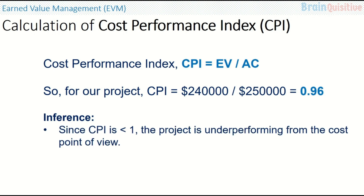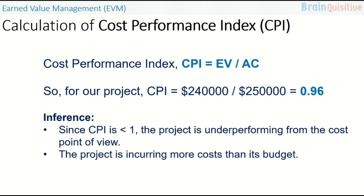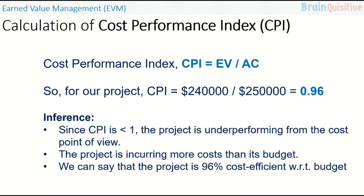Since the CPI value is less than 1, the project is underperforming from the cost point of view. If it is 1 then it is on track, and if it is greater than 1 then the project is outperforming from the cost point of view. The project is incurring more cost than its budget. We can say the project is 96% cost efficient with respect to the budget.